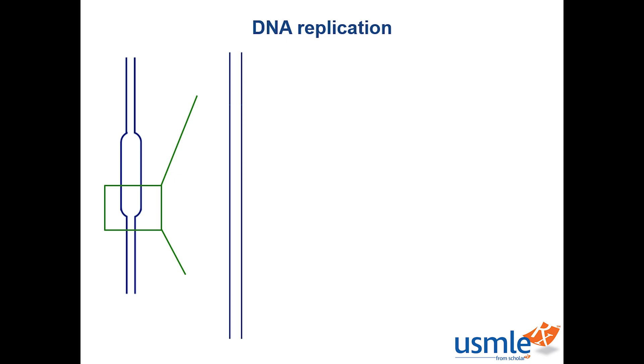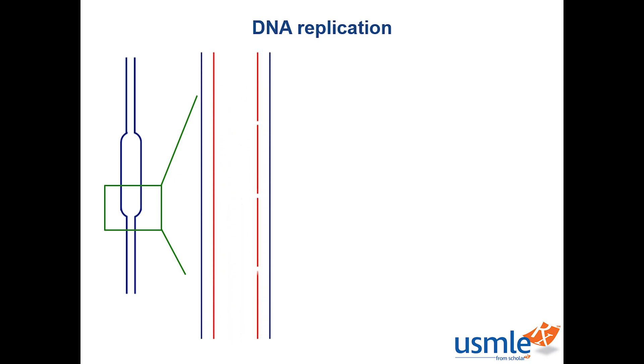Okay, so let's look at one of these replication forks. The blue is a parent DNA, and I'll show the newly synthesized DNA in red. The two strands replicate in slightly different ways. One replicates continuously and the other replicates in smaller pieces. The one on the left is called the leading strand, and the one on the right is the lagging strand.